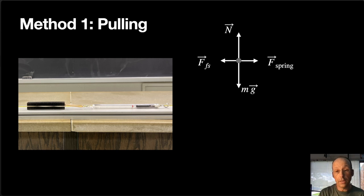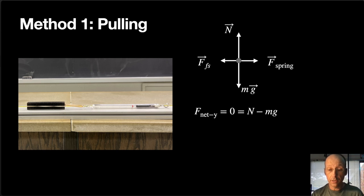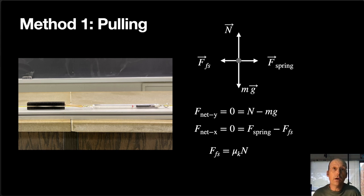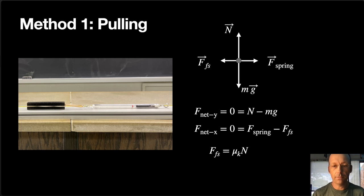The spring scale force equals the frictional force, and the normal force equals the gravitational force. Writing Newton's second law: in the y-direction, N minus mg equals zero; in the x-direction, F_spring minus F_s equals zero. At maximum friction, the spring force equals μs times N. There's a typo — that should be μs, not k.